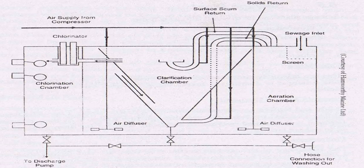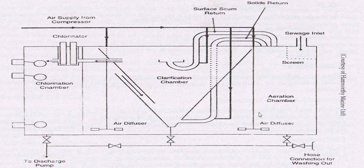This is a biological sewage treatment plant. There are three major chambers inside this plant: the aeration chamber, the clarification chamber, and the chlorination chamber. Normally all sewage coming into this aeration chamber firstly mixes with water and collects in this aeration chamber.